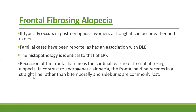The second variant of follicular lichen planus is frontal fibrosing alopecia. It typically occurs in post-menopausal women, although it may occur earlier and can be seen in men. Familial cases are reported and it is associated with DLE. The histopathology is identical to lichen planopilaris. Recession of the frontal hairline is the cardinal feature. In contrast to androgenetic alopecia, the frontal hairline recedes in a straight line rather than bitemporally, and sideburns are commonly lost.